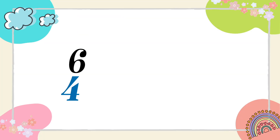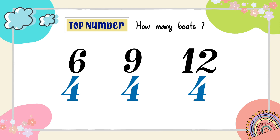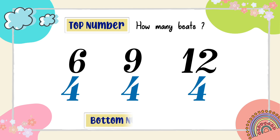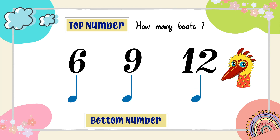They are 6/4, 9/4, and 12/4 time signatures. Take a look at them. The top number tells you how many beats are in a bar, and the bottom number tells you the type of beats. In this case, it's 4. The number 4 at the bottom indicates a crotchet beat.